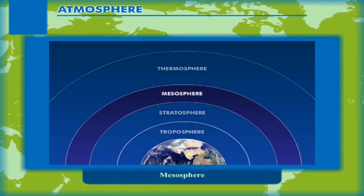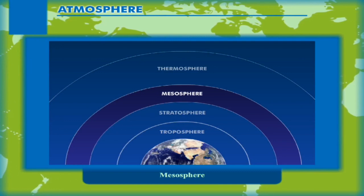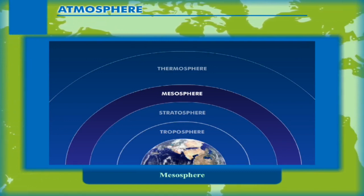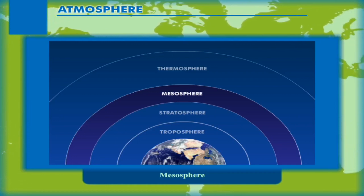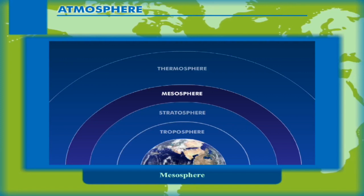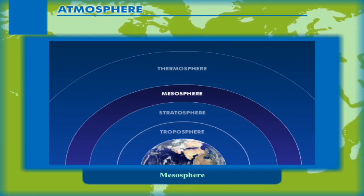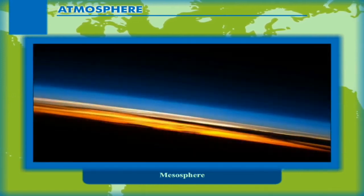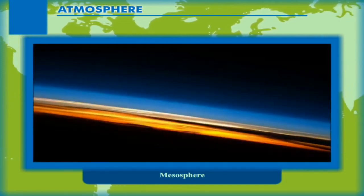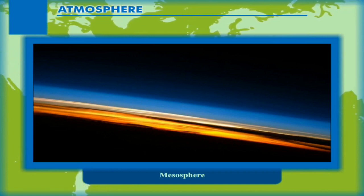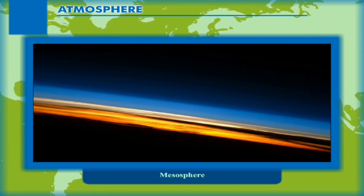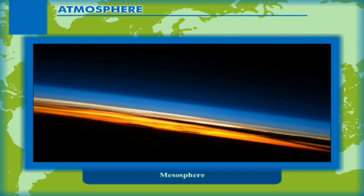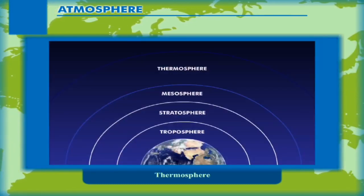Mesosphere: It lies above the stratosphere and extends to about 80 km above the earth's surface. Here, the temperature decreases with height until it reaches minus 100 degrees Celsius. This layer has the lowest temperature in the atmosphere — it is the coldest layer of the atmosphere. The upper limit of this layer is called the mesopause.